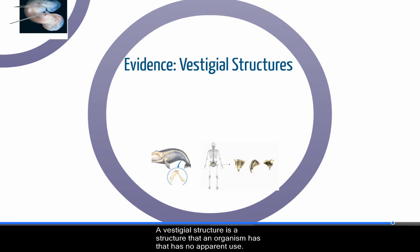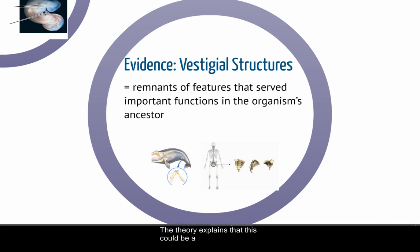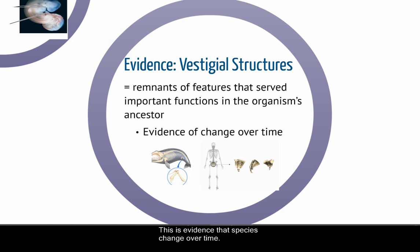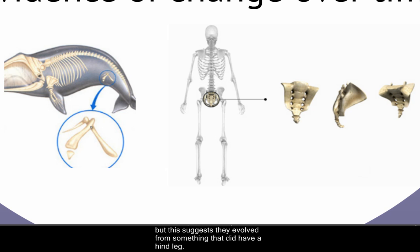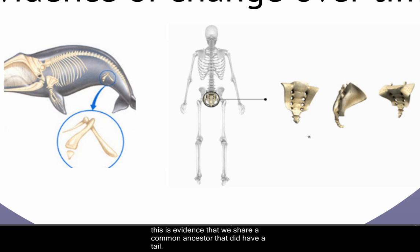A vestigial structure is a structure that an organism has with no apparent use — a remnant of a feature that was important to the species' ancestor that it no longer uses. This is evidence that species change over time. A classic example is that whales actually have pelvic bones and a hind leg bone, even though they don't have hind legs, suggesting they evolved from something that did. We also have a tail bone, which is evidence that we share a common ancestor that had a tail, before we began walking upright and no longer needed it for balance.